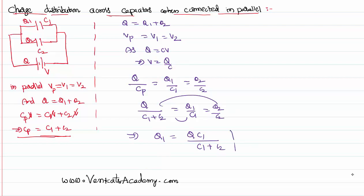Equating the first and last, Q2 could be said like Q into C2 divided by C1 plus C2. This is how the charge is distributed. This C1 plus C2 are common for all of them. So Q1 is directly proportional to C1, Q2 is directly proportional to C2.